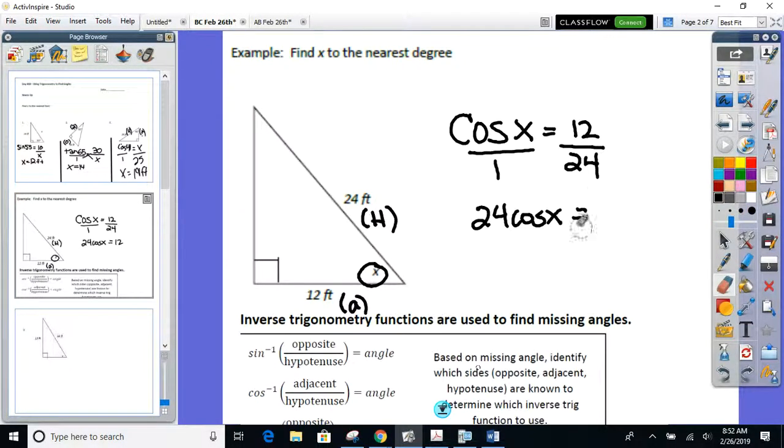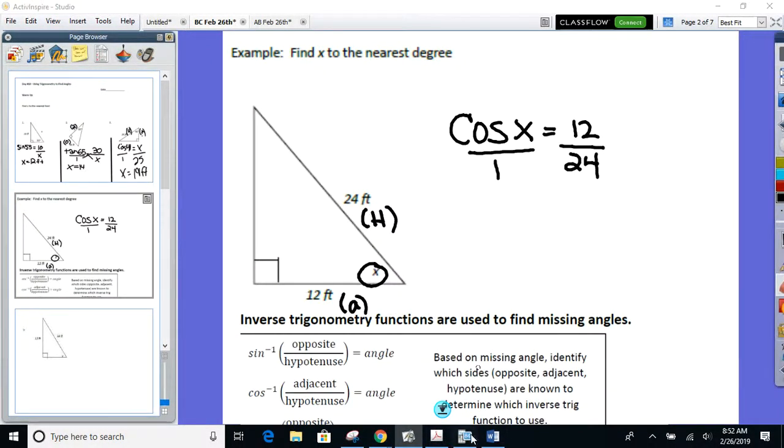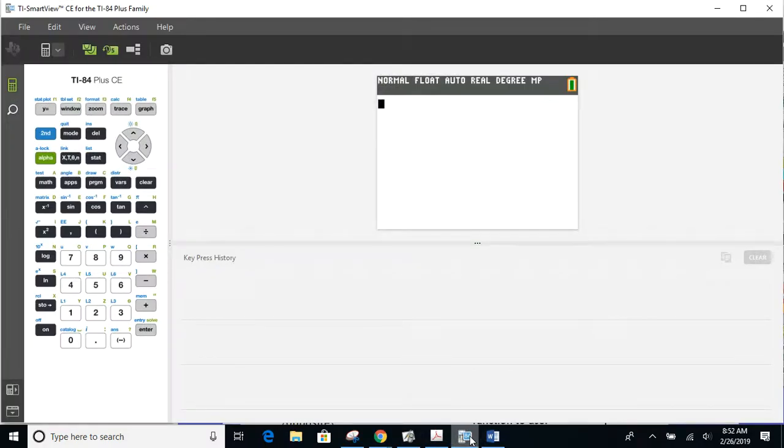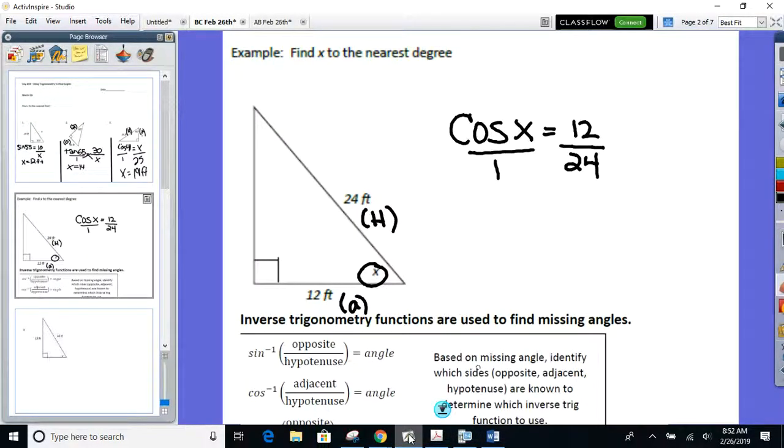So instead, what we're going to do, if you take a look at your calculators right now, right above the sine, cosine, and tangent buttons, everyone see to the negative 1 for each. Those are called the inverses. The inverses of sine, cosine, and tangent. And that's what we're going to use here to find the angles.